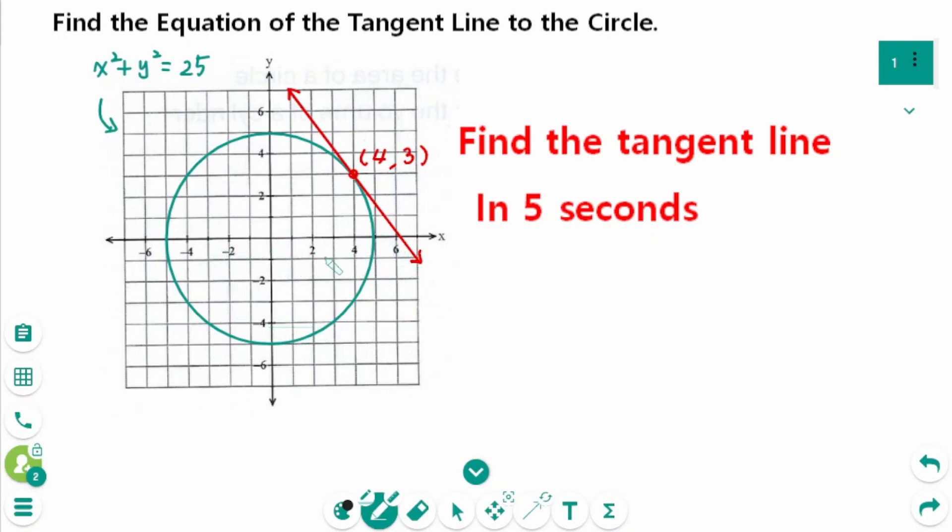Finding the equation of the tangent at the point (4,3) on a circle takes only 5 seconds. The point is (4,3), so 4x plus 3y equals 25. That's the answer.